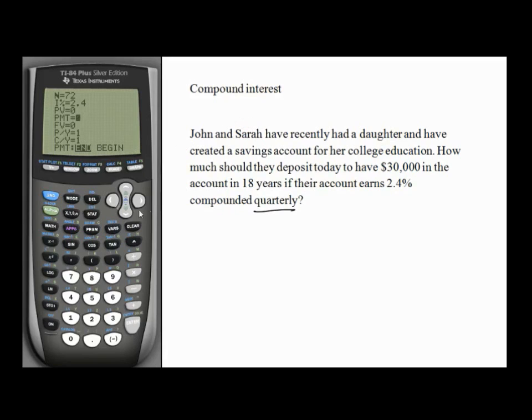So we can move down to future value. That's the amount of money we want to have in the future. We want to be able to take that money out of the account, so that's going to make that a positive number, $30,000.